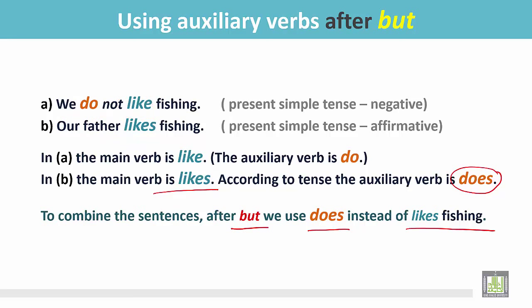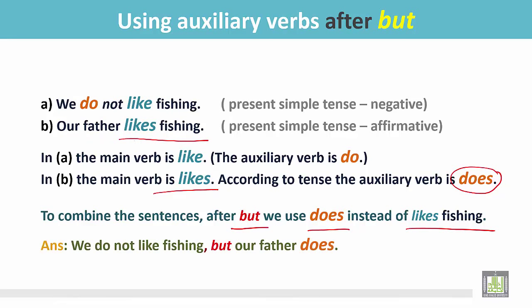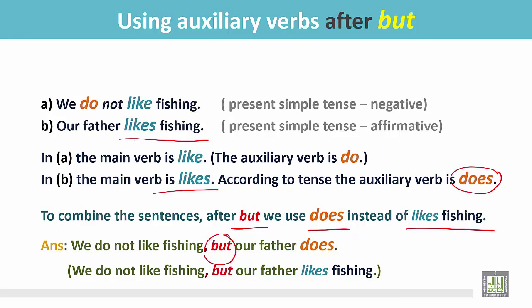When we combine these two sentences after 'but', we use 'does' instead of 'likes fishing'. We are not going to use 'likes fishing' after 'but'. The answer: 'We do not like fishing, but our father does.' We do not write the full sentence: 'We do not like fishing, but our father likes fishing.'